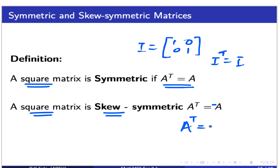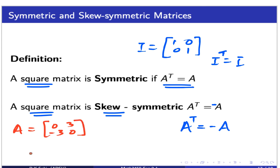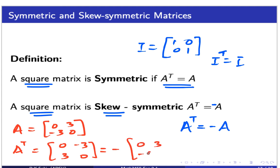Let's look at an example of a skew symmetric matrix. Suppose A = [[0, 3], [−3, 0]]. Taking the transpose gives A^T = [[0, −3], [3, 0]], which is the same as negative A. So this matrix is skew symmetric.